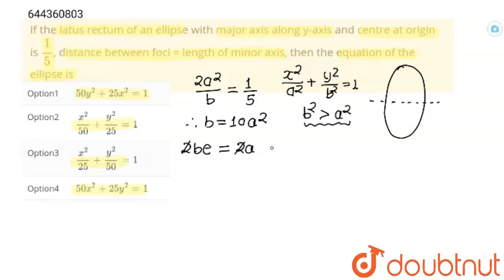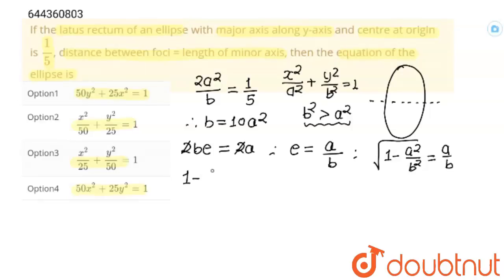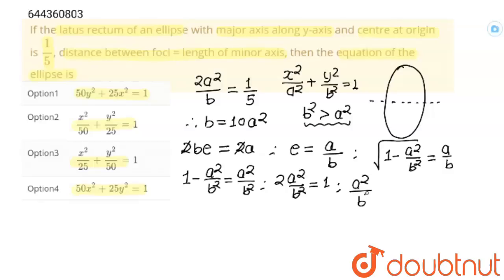Both sides, 2 will cancel out, giving us e = a/b. Now, e = √(1 − a²/b²). Setting √(1 − a²/b²) = a/b, the term −a²/b² moves to the right-hand side, giving 2(a²/b²) = 1, and therefore a²/b² = 1/2.